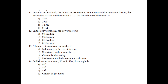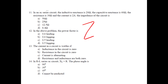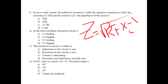In an AC series circuit, the inductive reactance XL is 20 ohm, the capacitive reactance XC is 60 ohm, and the resistance R is 30 ohm. The impedance of the circuit is Z = √(R² + (XL − XC)²). Substituting: R = 30, XL = 20, XC = 60, the answer is Z = 50 ohm.